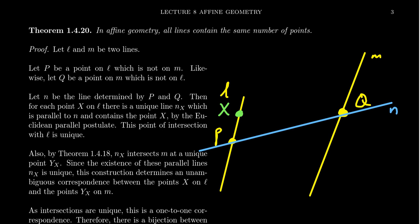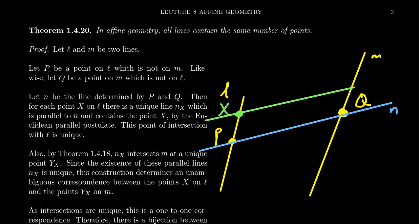By the Euclidean parallel postulate, for any point X on L there exists a unique line parallel to n that passes through X. Consider that line — the unique parallel line containing X that is parallel to n. We're going to call this line n_X: a line parallel to n that passes through the point X. Such a line is guaranteed by the Euclidean parallel postulate, and it's the only one.